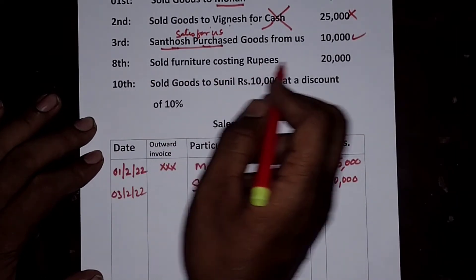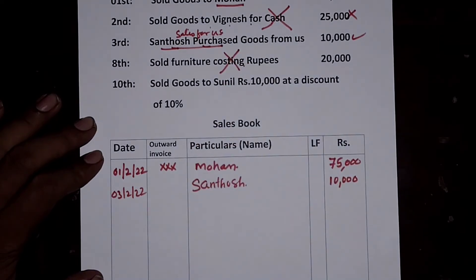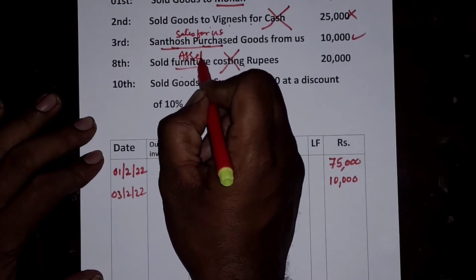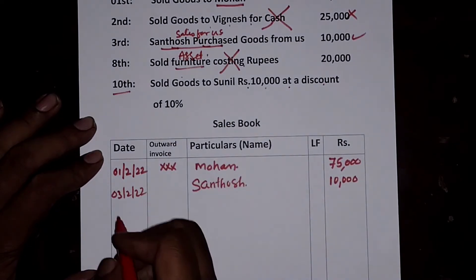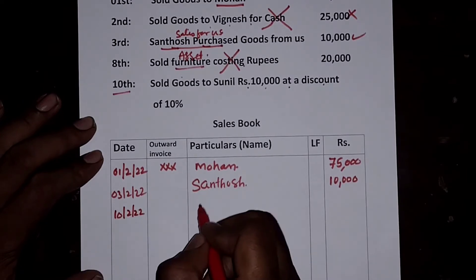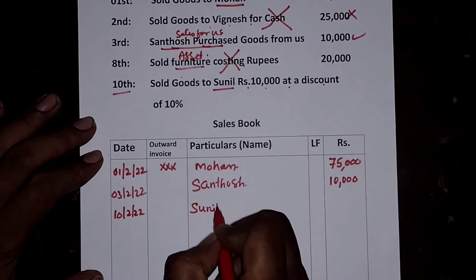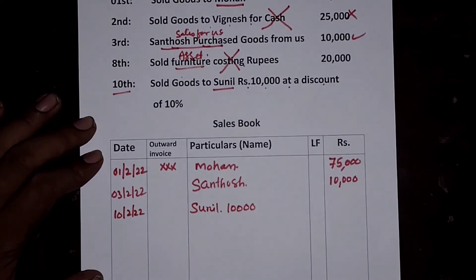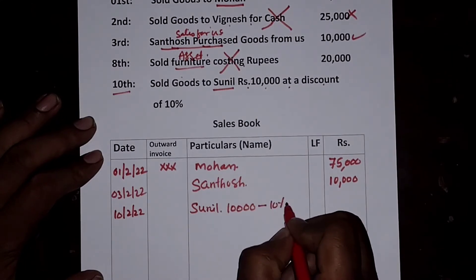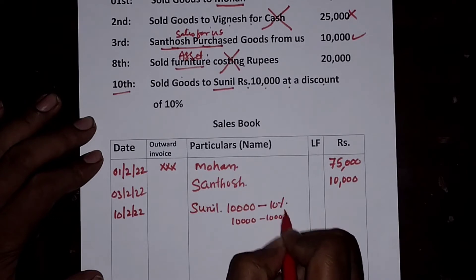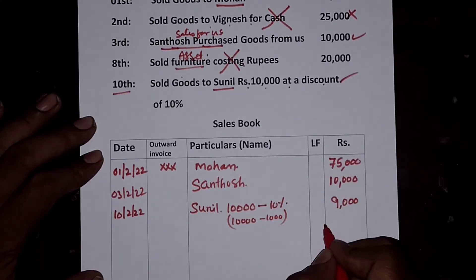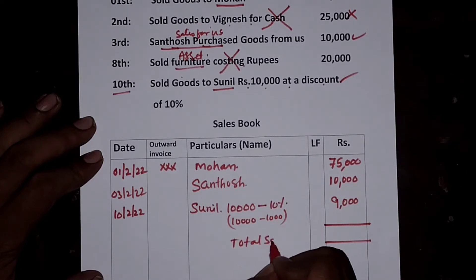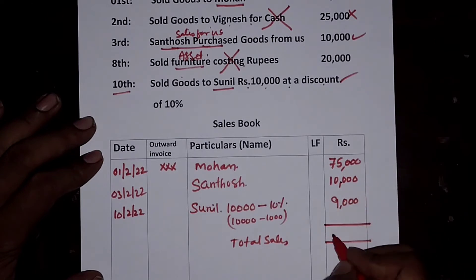Sold furniture costing Rs. 20,000 — furniture should not appear because it is an asset. On 10th February 2022, sold goods to Sunil for Rs. 10,000 at a discount of 10%, so 10,000 minus 1,000 discount equals Rs. 9,000. The total sales comes to Rs. 75,000 + Rs. 10,000 + Rs. 9,000 = Rs. 94,000.